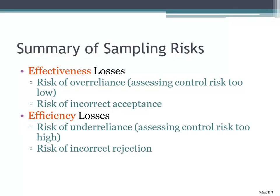You're basically saying the process works, so you don't have to look at as many transactions because you're convinced that the process works. Your risk in assessing it too low is that you could not uncover a material misstatement — that's your risk of incorrect acceptance. You risk accepting that your sample results are representative of the entire population and that there are no material misstatements.